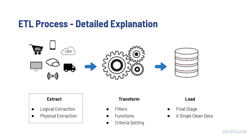This data goes into what's called a staging area where the information is temporarily housed. There are two main types of extraction methods: logical and physical. When it comes to physical extraction, there are two types: online and offline. Online extraction is when the ETL tool has a direct connection to the data sources. Offline extraction is when the data is not extracted directly from the source; instead, it gets aggregated into a flat file which can be used to create charts and analyze the data manually.